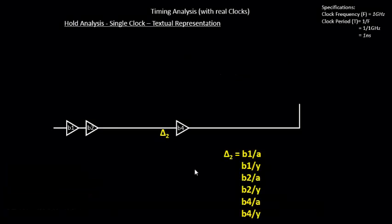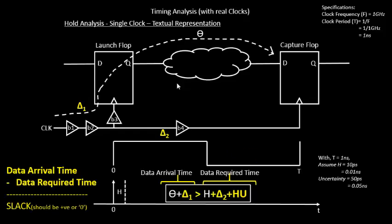Similarly, the capture clock network delay δ2 is represented as: B1 of A, B1 of Y, B2 of A, B2 of Y, B4 of A, and B4 of Y. The defining equation for hold is: θ + δ1 > H + δ2 + hold uncertainty.